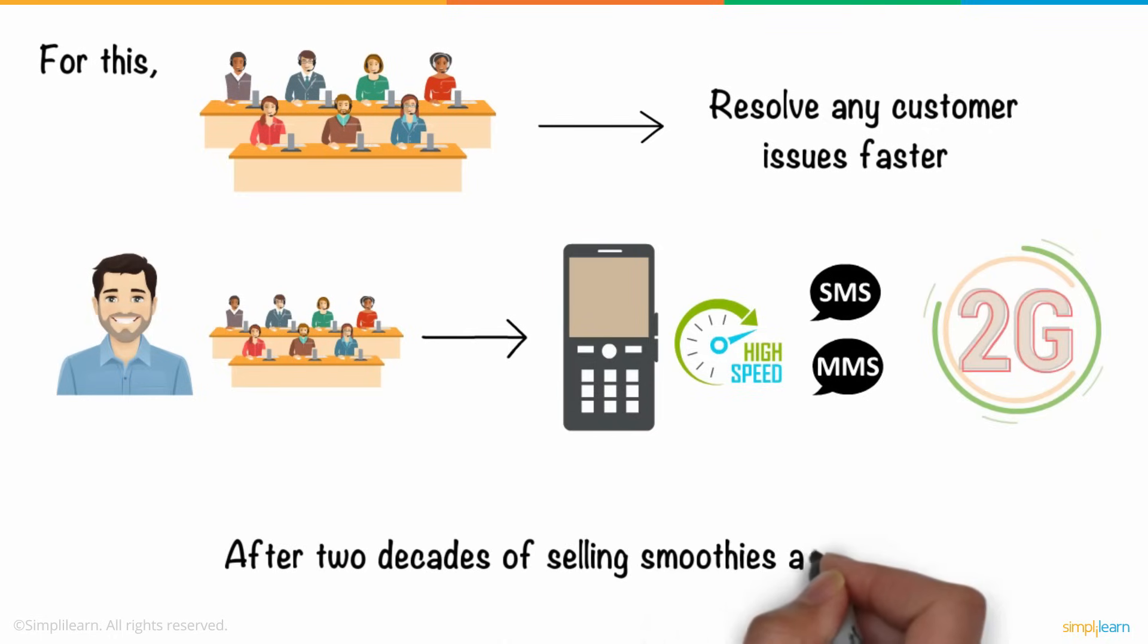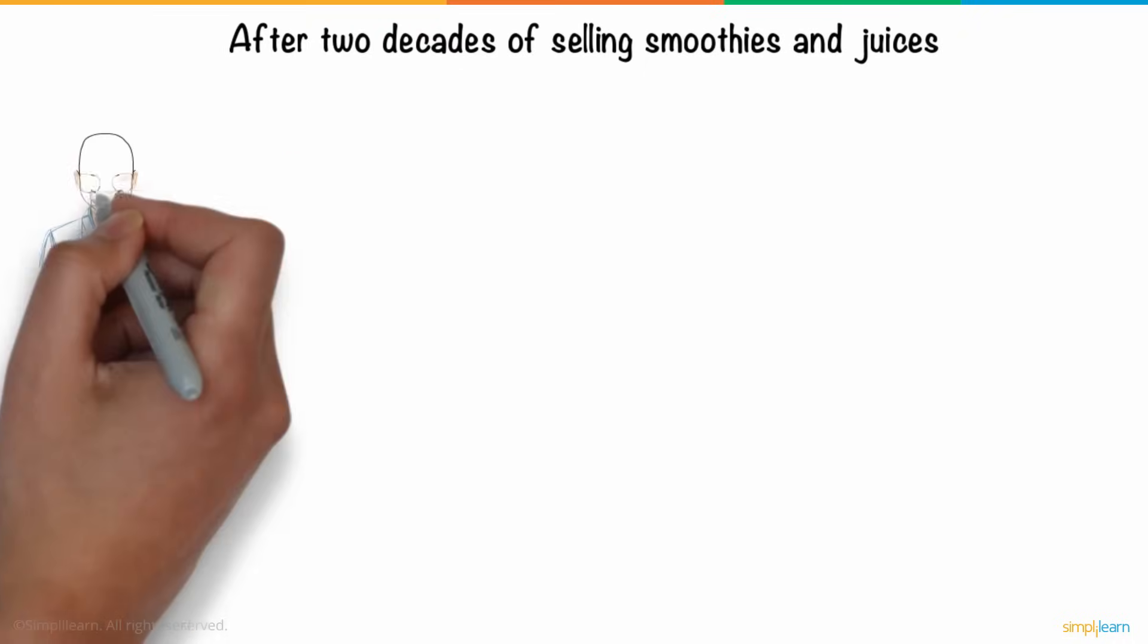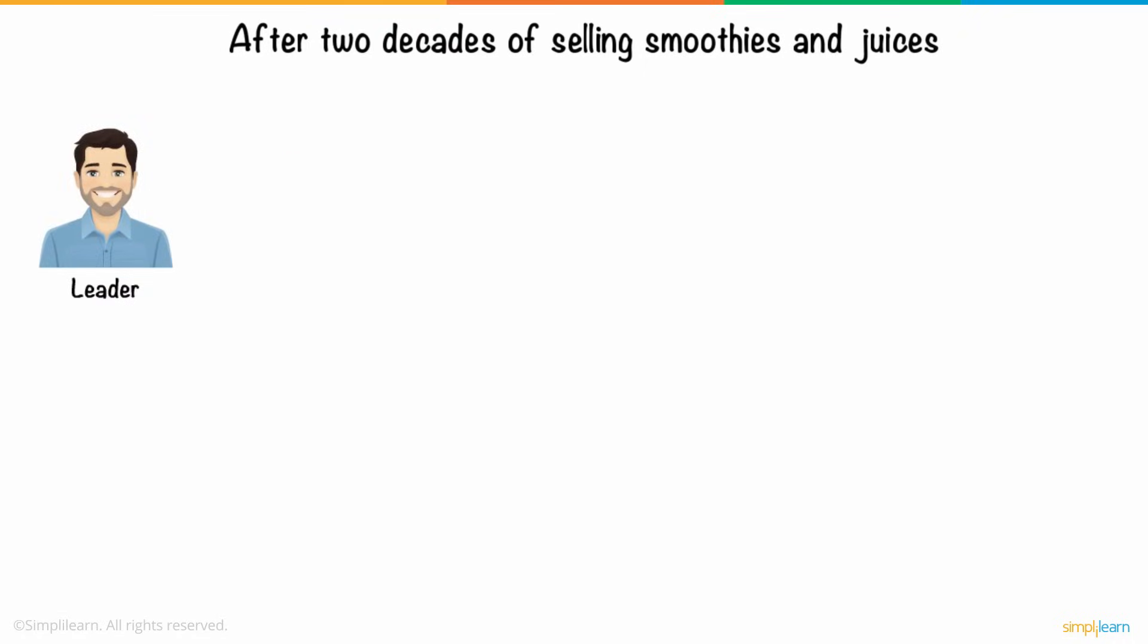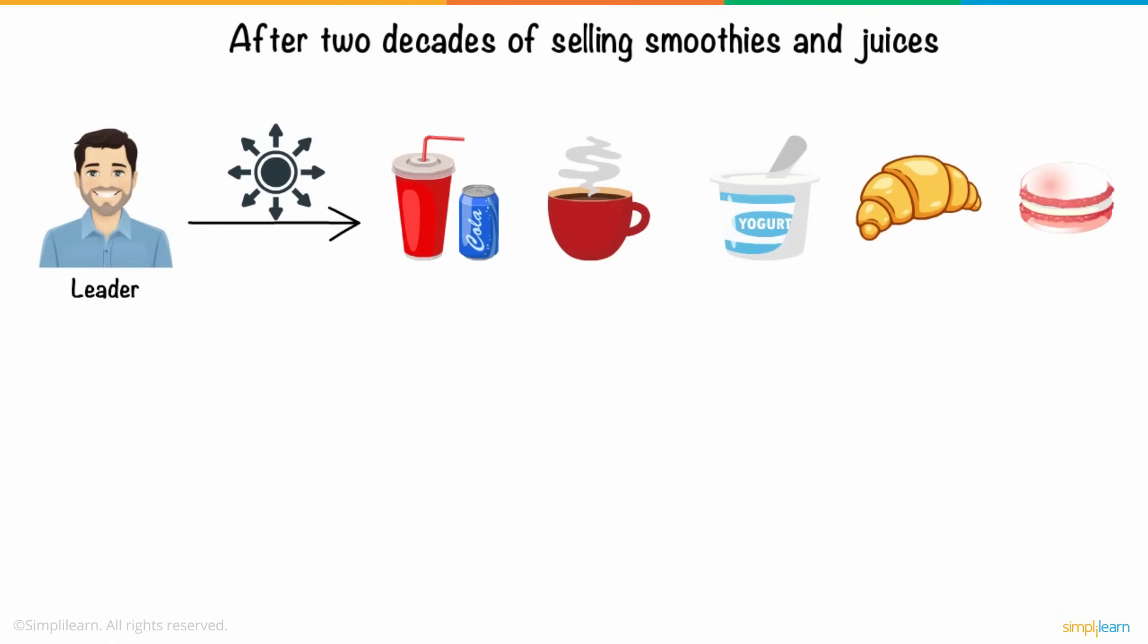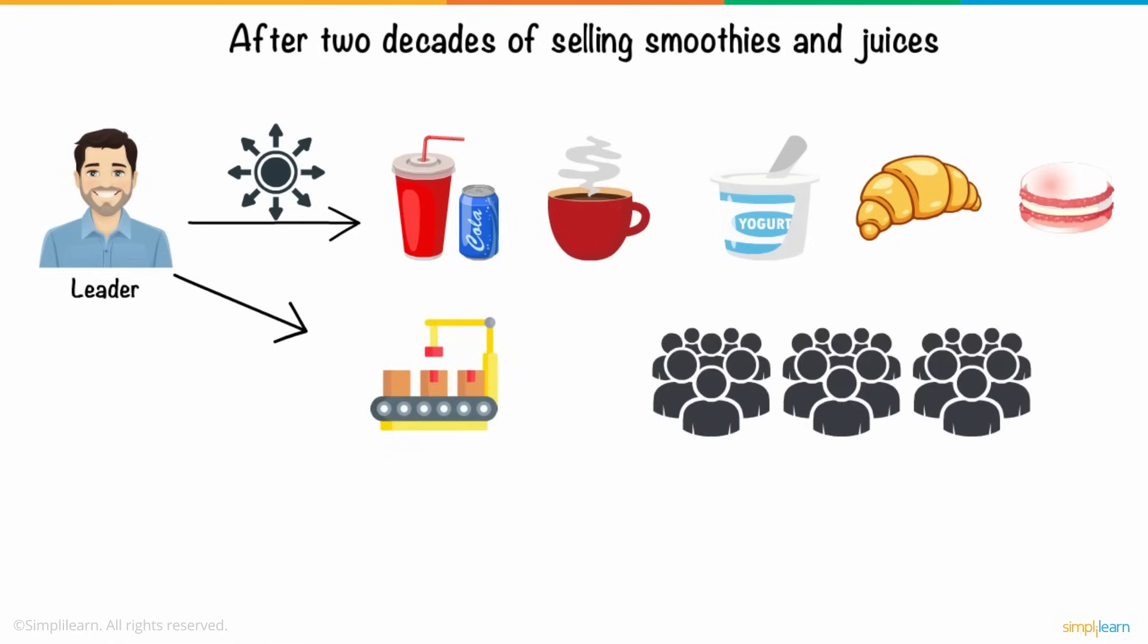After two decades of selling smoothies and juices, Ted had now become a leader in this category. So, he decided to diversify and expand his business to other categories such as soft drinks, coffee, yogurts, croissants, macarons, etc. That meant he now had more products to manufacture and more customers to serve.